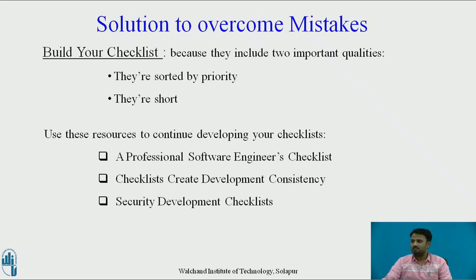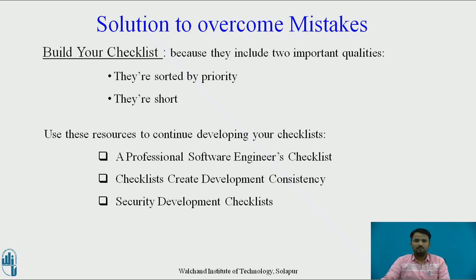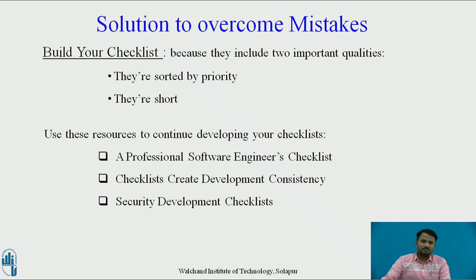Solutions to overcome these mistakes: you can build checklists, because they contain two important qualities — they are prioritized and they are short. A well-written checklist is focused on the most important points. When your plan is in trouble, you need to focus on the most important causes of failure, so you have to set priorities. A checklist with 10 points or less is a good rule of thumb. If your checklist is longer than one page, that is a problem. Resources include a professional software engineer's checklist and a security development checklist for development consistency.